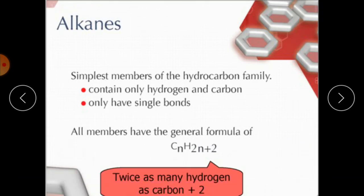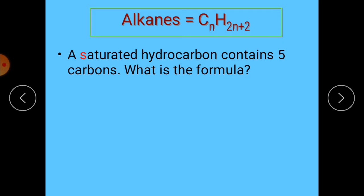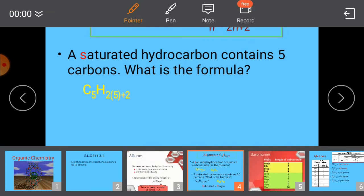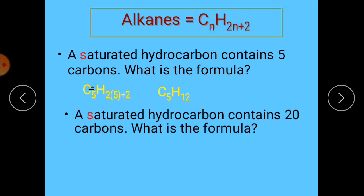You have twice as many hydrogen as carbon. The formula of alkanes is CₙH₂ₙ₊₂. If a saturated hydrocarbon contains 5 carbons, what you have to do is write down 5 instead of n. So C₅, then 2×5 is 10, and 10+2 = 12.